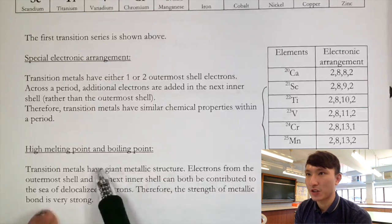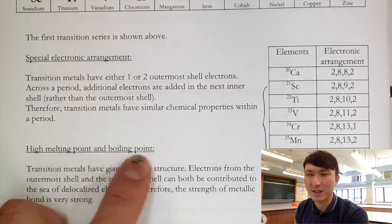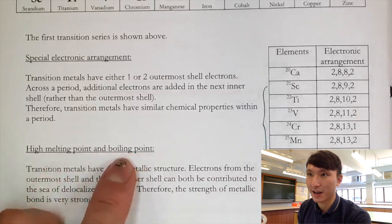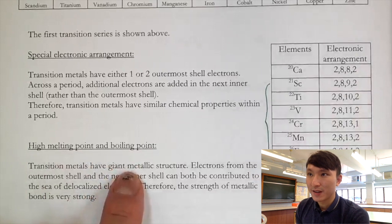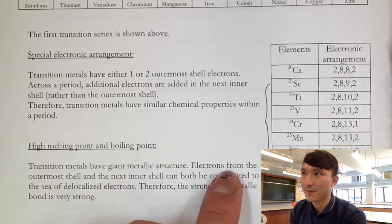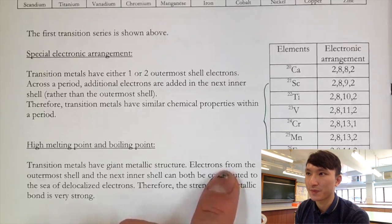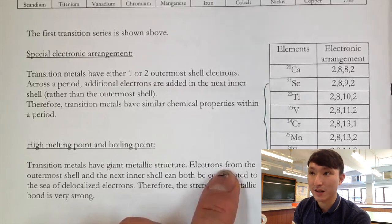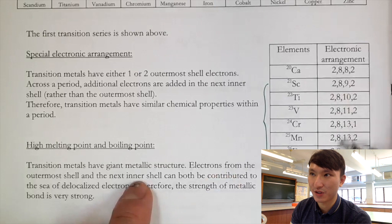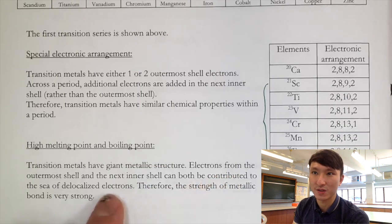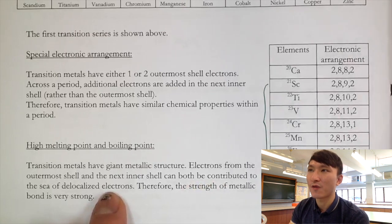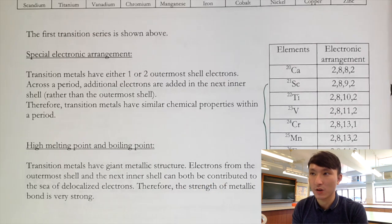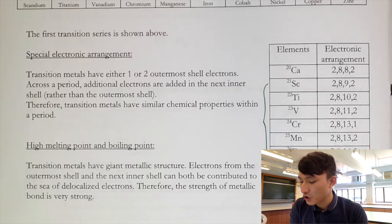The second characteristic of transition metals is that they have very high melting points — over 1000°C. The reason is that they all have a giant metallic structure, and not only do the outermost one or two electrons contribute to the sea of delocalized electrons, but the third shell electrons can also contribute, thereby strengthening the metallic bond.